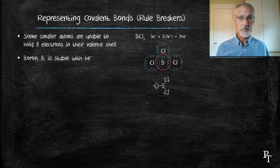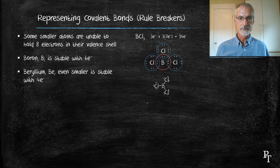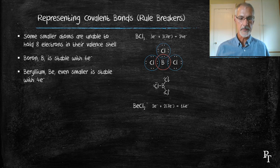Another atom, beryllium, even smaller than boron, can only hold four electrons maximum. So when we take a look at its structure, beryllium dichloride, we have 16 electrons, or eight pairs.